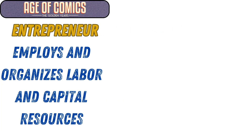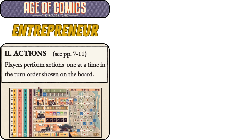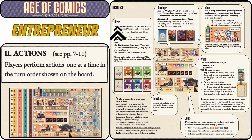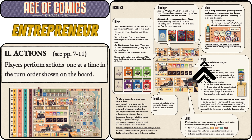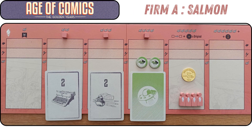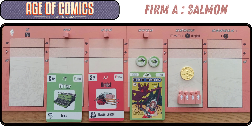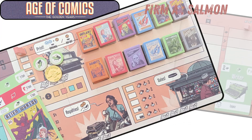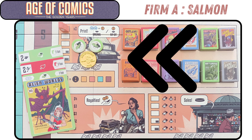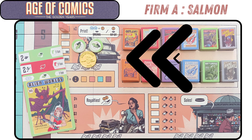Phase two of round one — publishers take actions. As an entrepreneur publisher, you employ and organize labor and capital resources by hiring writers and artists, developing original comic books, developing ideas for comics, printing original or ripoff comic books, collecting royalties, or taking sales orders from newsstands in Manhattan. Firm A — Salmon — has a value two sci-fi writer and value two romance artist, and will print a sci-fi comic by placing their editor meeple on the action, paying two idea tokens and four dollars, as the value of the comic equals the experience level value of the artist and writer.